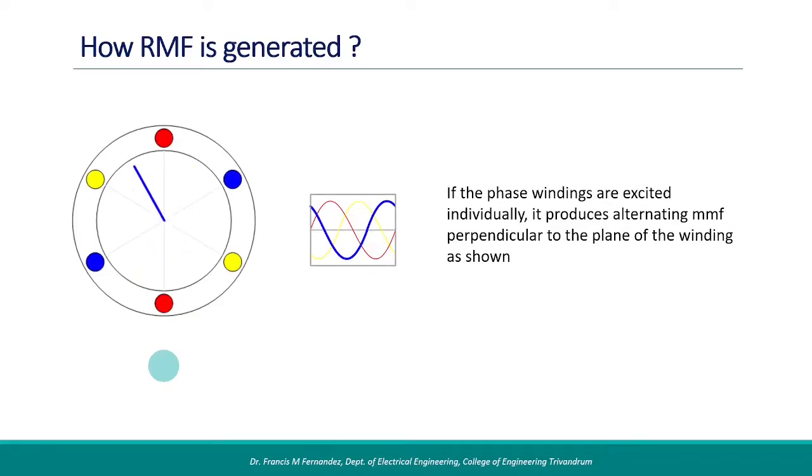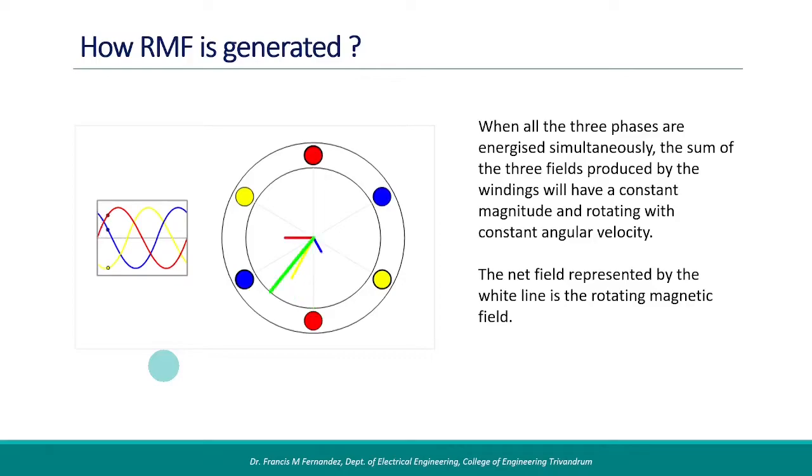When all the three phases are energized simultaneously, the sum of the three fields makes up as shown by the green line here. Here we can see how the flux is produced in different phase positions. The net flux represented by the green line has constant magnitude and rotates with constant angular velocity. This is the rotating magnetic field.